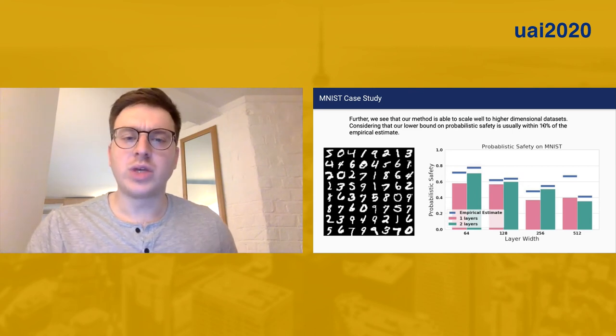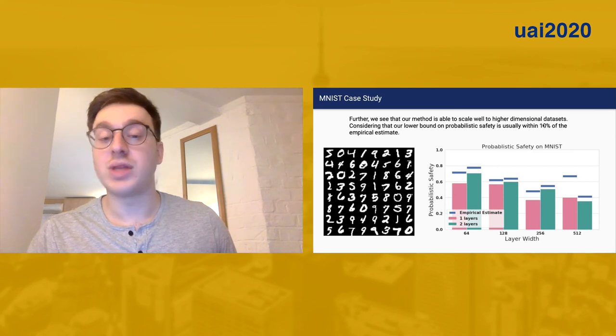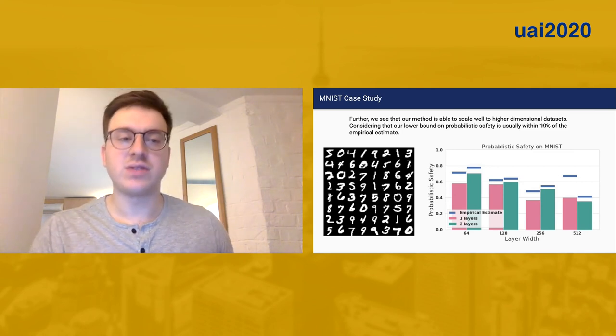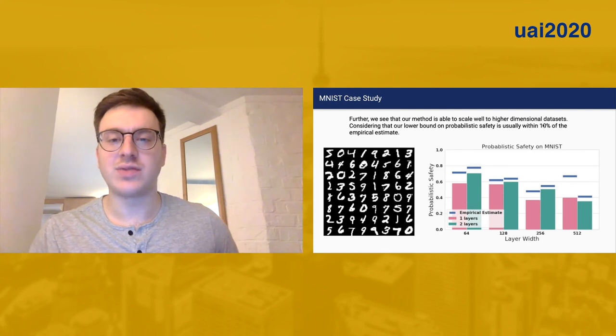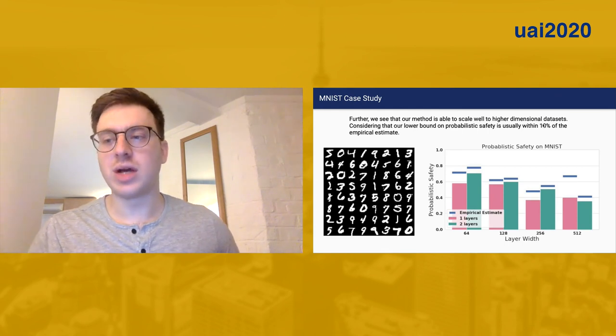What we do is we compare our lower bound safety. Safety in this case is that the classification of the neural network remains consistent. So if it's classified as a five, it's remained classified as a five for every possible perturbation of the input.